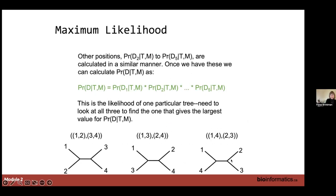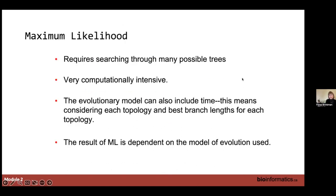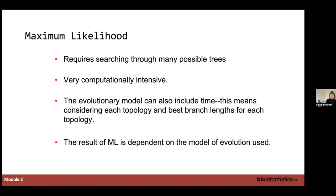With 16 values calculated, we can determine the probability of the column given the tree and model. Other positions are calculated similarly, and once we have these, we put them all together to get the likelihood of one particular tree. But we need to look at all three possible topologies to find the one giving the largest value. The result is nice because it gives you an actual probability of that tree, but it's dependent on the model of evolution used.